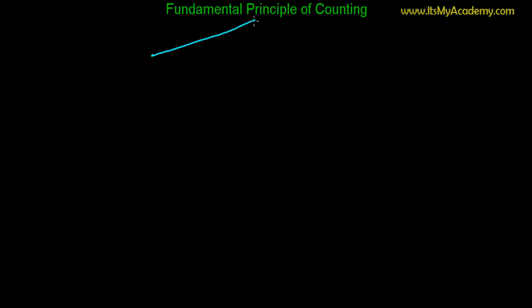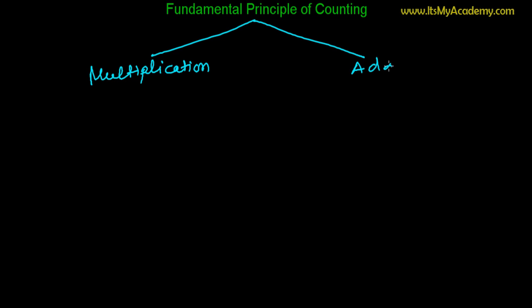First we're going to discuss the Fundamental Principle of Counting. There are two divisions in the fundamental principle of counting: one is the Fundamental Principle of Multiplication and another is the Fundamental Principle of Addition. The fundamental principle of multiplication is much more important than addition. Addition you can easily understand, and multiplication is also easy. Let's first discuss multiplication.